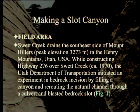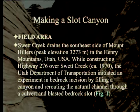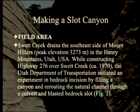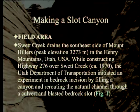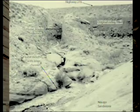The field area is Sweat Creek, which drains the southeast side of Mount Hillers — peak elevation 3,273 meters, over 10,000 feet high — in the Henry Mountains in Utah. While constructing Highway 276 over Sweat Creek around 1970, the Utah Department of Transportation initiated an experiment in bedrock incision by filling a canyon and rerouting the natural channel through a culvert and a blasted bedrock slot.